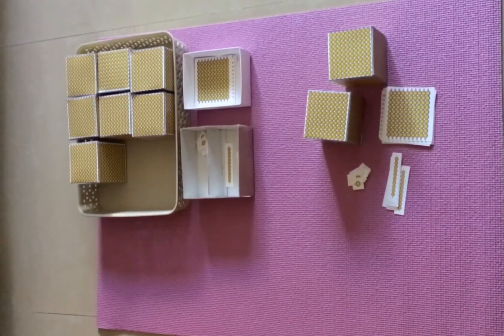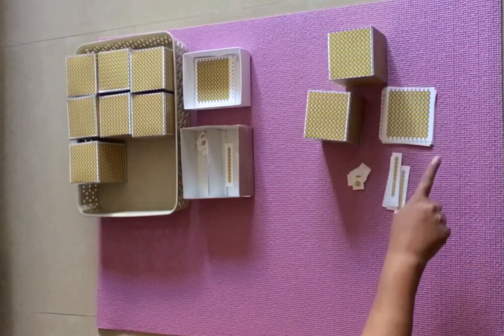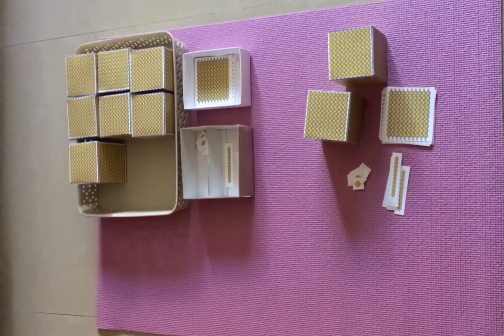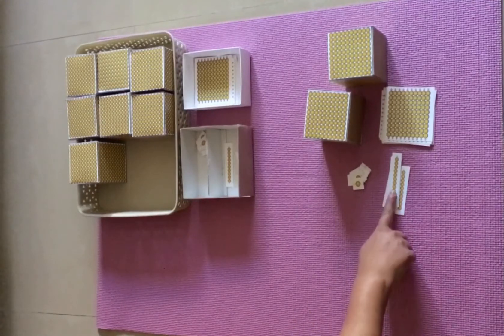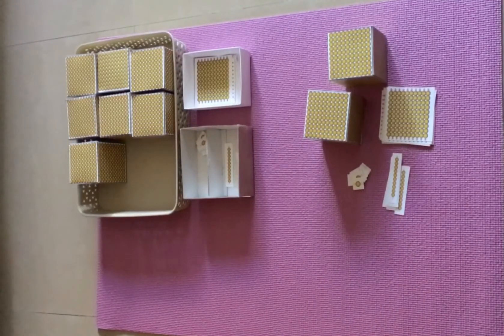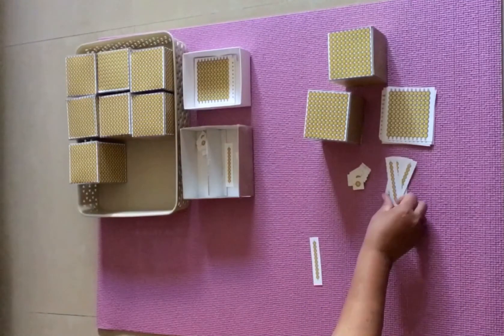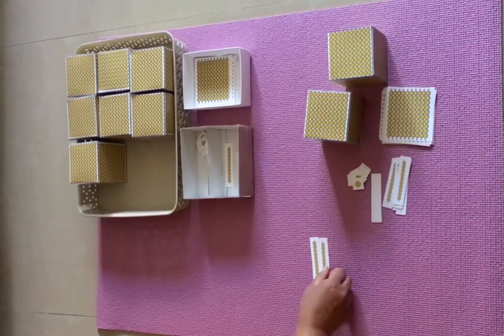Now ask the child, can you tell me how much I have got here? Child may say no. We say even I don't know, we need to count. Shall we count now? Ask the child, first what do you want to count? Child may say tens. Start counting by isolating each ten.